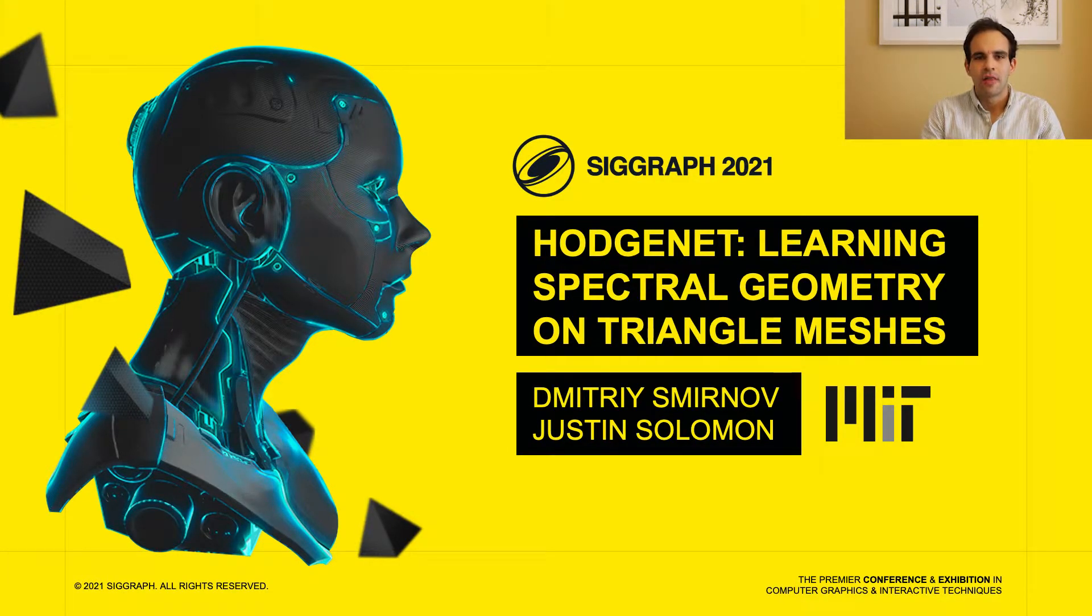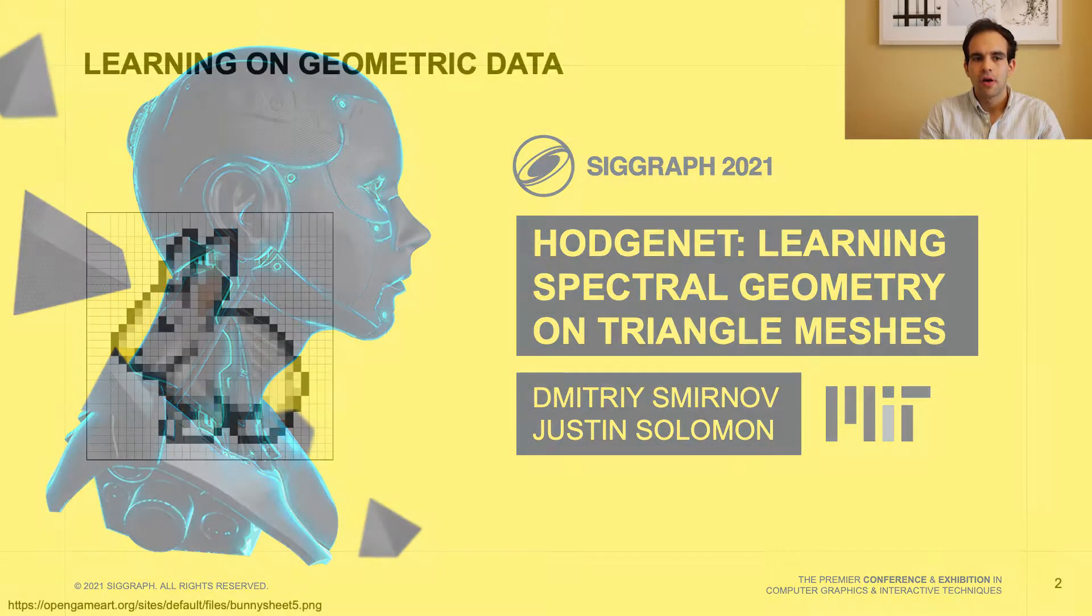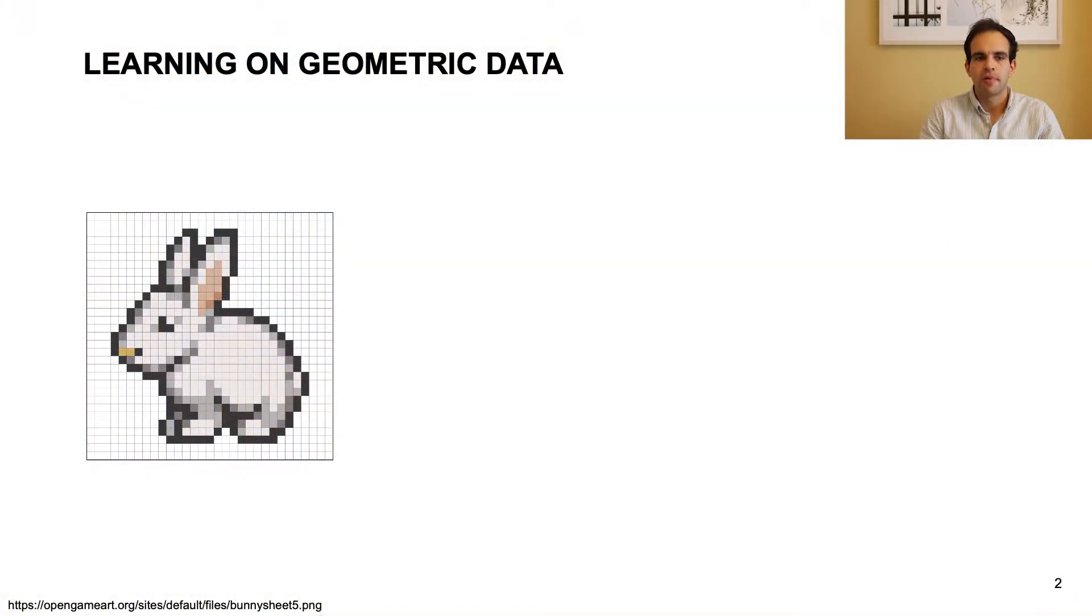My name is Dima Smirnov and this is work done together with Justin Solomon at MIT. Recent advances in deep learning have been successfully applied to various types of geometric data. A common data modality for computer graphics learning problems is the raster image. This is largely because convolutional neural networks are fundamentally compatible with the pixel grid of an image. The convolution operator takes advantage of its regular structure.